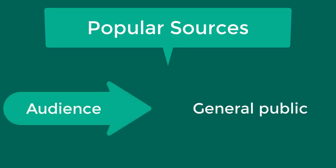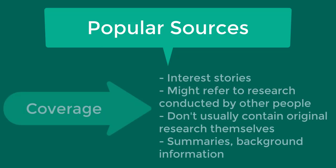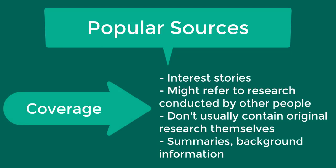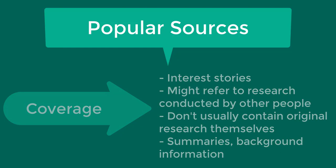Unlike scholarly articles, the audience for popular articles is usually the general public rather than scholars and students. Popular articles usually cover a broad variety of interest stories from different subjects that might refer to research conducted by other people, but they do not actually contain the original research themselves. These articles usually provide summaries of topics and background information.